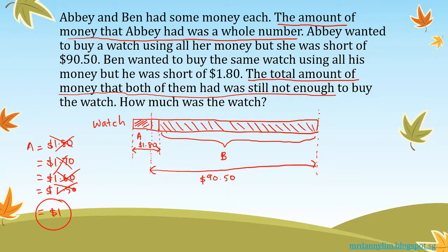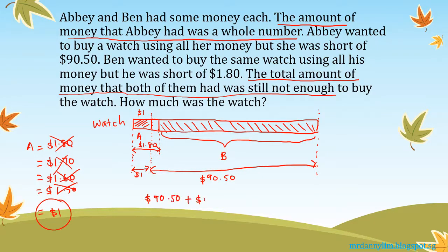So if Abby had one dollar, I draw the line down here showing one dollar. The total cost of the watch is $90.50 plus one dollar, which gives us ninety-one dollars and fifty cents.